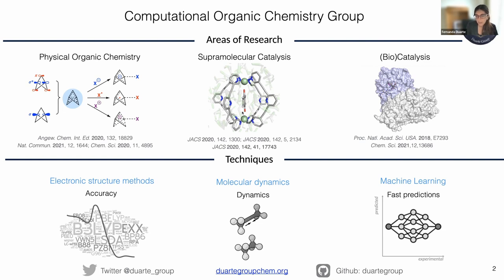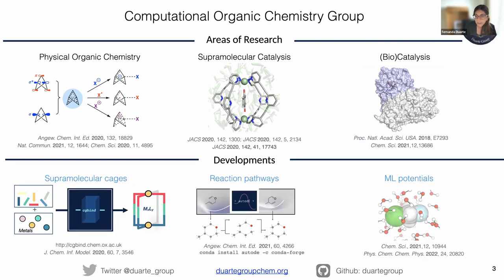We use a couple of different techniques, including DFT, molecular dynamics, and more recently machine learning. We have been users trying to use all these techniques to solve chemical problems, but also trying to develop some tools that can make our life easier. Among them, we have been developing tools to generate supermolecular cages, explore reaction pathways, and develop machine learning potentials. Today we would like to mention these two works because they are highly connected and aim to address automation and better exploration of reactivity.